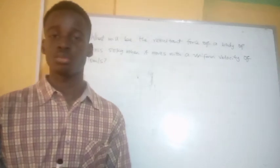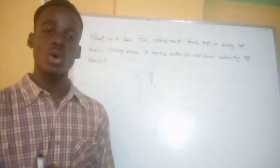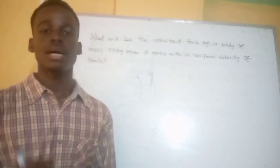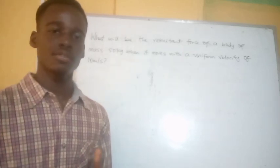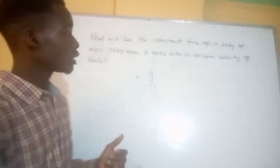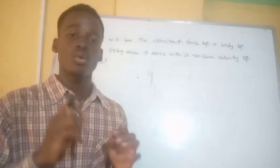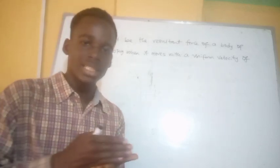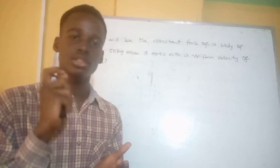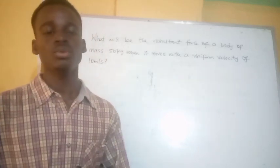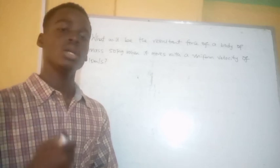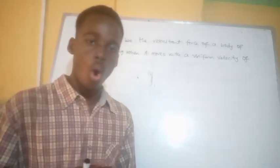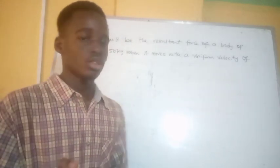Welcome back. To solve this question we need to refer to Newton's First Law of Motion, which states that a body will remain at rest or in uniform motion — meaning constant velocity — until that body is acted upon by an external force. That external force could be the resultant force. Looking closely at the law, a body at rest or moving with constant velocity has a resultant force of zero.